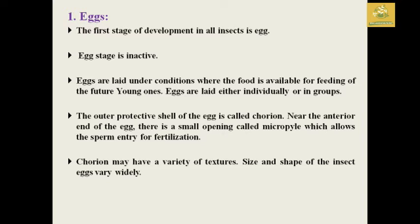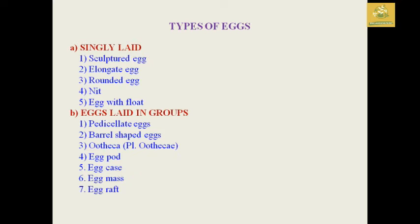After that we are going to see the immature stages of insects. The first stage is the egg, which is the first stage of each and every insect. The egg is mostly inactive in nature. Eggs are laid under conditions where food is available, and are laid either individually or in groups based on environmental changes. The outer protective shell of the egg is known as the chorion. Near the anterior end there is a small opening called the micropyle, which allows entry of sperm for fertilization. The chorion is made up of a variety of structures, and the shape and size of eggs vary due to physiological changes.